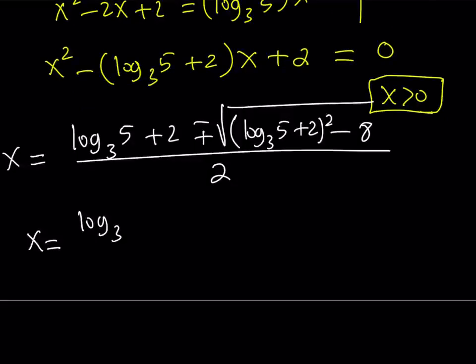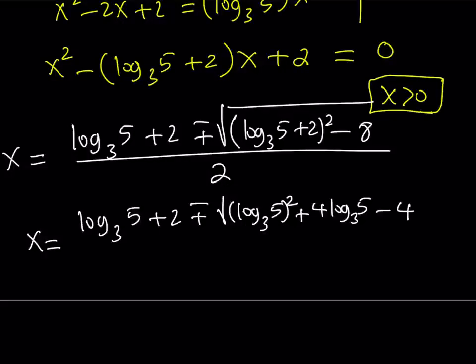So let's go ahead and simplify this expression a little bit, see what happens. It's log base 3 of 5 plus 2, plus minus, now here we're going to square the expression. So it's going to give me log base 3 of 5 quantity squared, plus 4 times log base 3 of 5, plus 4 minus 8, which is just going to give me minus 4 there. And then all of that is going to be divided by 2.